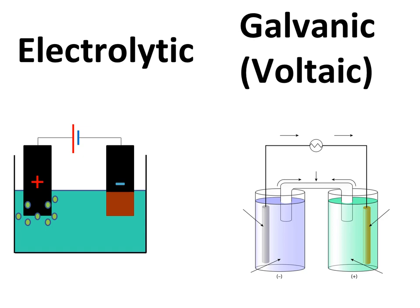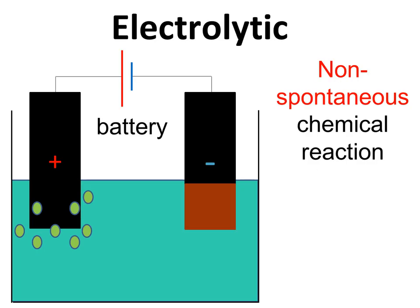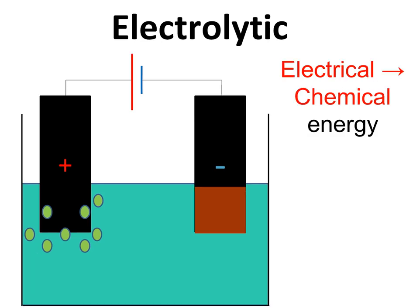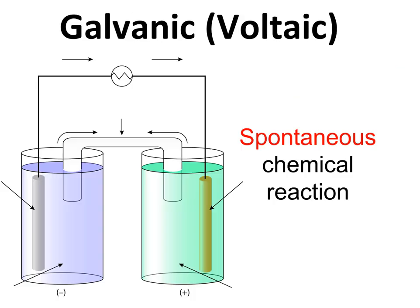Galvanic cells are also called voltaic cells. In an electrolytic cell, a potential difference is set up by a power source, for example a battery, that forces a non-spontaneous chemical reaction to occur. So an electrolytic cell converts electrical energy to chemical energy.